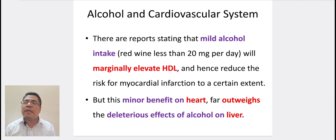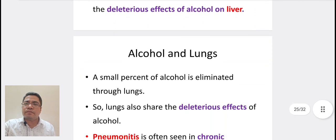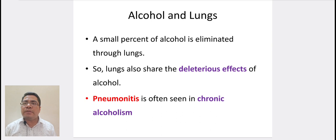Coming to alcohol and the cardiovascular system. There are reports stating that mild alcohol intake will marginally elevate HDL and hence reduce the risk for myocardial infarction to a certain extent. But this minor effect on the heart far outweighs the deleterious effect of alcohol on the liver. Coming to alcohol and lungs: a small percentage of alcohol is eliminated through the lungs, so lungs also share the deleterious effect of alcohol. Pneumonitis is often seen in chronic alcoholism.